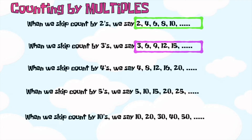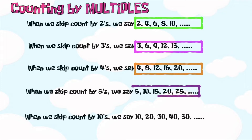Three, six, nine, twelve, fifteen, and so on — that is the multiples of three. Four, eight, twelve, sixteen, twenty, and so on — that is the multiples of four. Five, ten, fifteen, twenty, twenty-five — that is the multiples of five. And ten, twenty, thirty, forty, fifty — that is the multiples of ten.